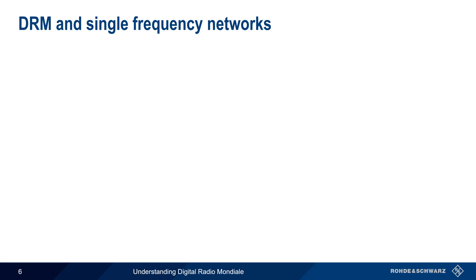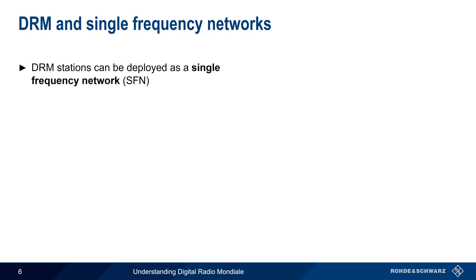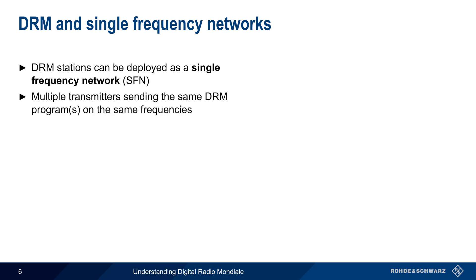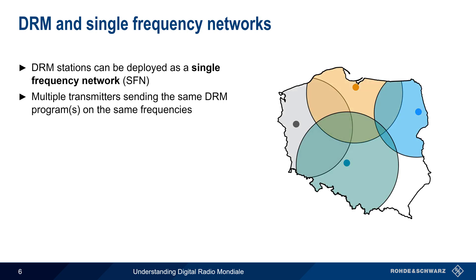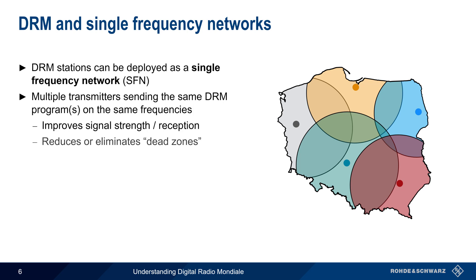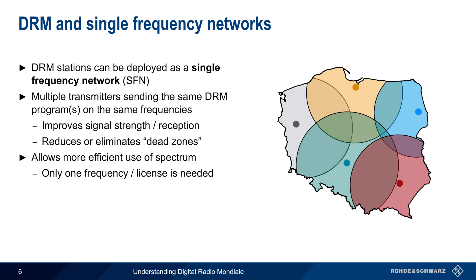Another way in which DRM can optimize frequency allocations is single frequency networks. In a single frequency network, multiple transmitters send the same DRM program simultaneously on the same frequency. This provides two major benefits: it improves signal strength in the overlapping areas, and it can also be used to reduce or eliminate dead zones where reception is difficult or impossible using only a single transmitter. Single frequency networks are also more efficient from a regulatory point of view, since large geographical areas can be covered using only a single frequency, often with only a single spectrum license.